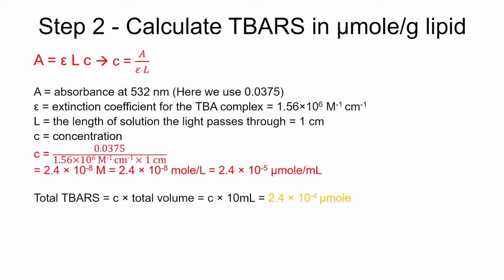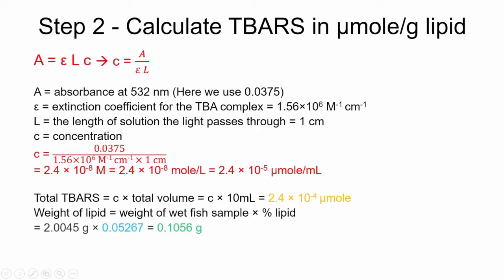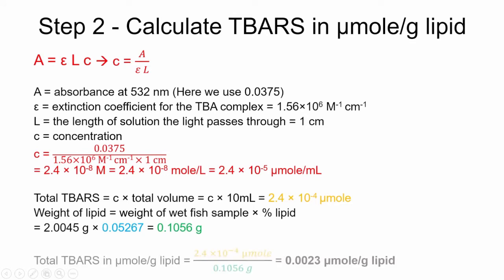Calculate the total TBARS by multiplying the TBARS concentration by the total volume of your solution, which is 10 milliliters. To convert the unit of TBARS into micromole per gram of lipid, first calculate the total weight of the lipids in your wet fish sample by multiplying its weight by the percent lipid you calculated in step 1. Next, divide the total TBARS by the total lipid weight in the sample.